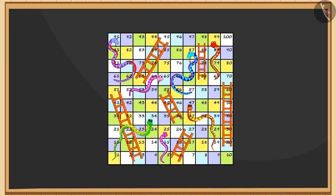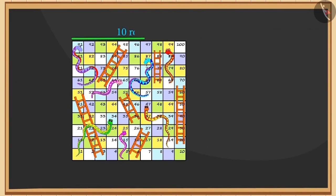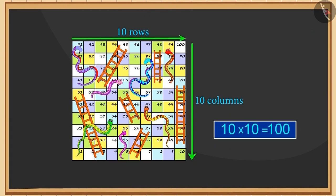An interesting image. Do you recognize it? Yes, this is a snakes and ladders board game. It consists of 10 rows of 10 squares each, thus it has a total of 100 small squares.